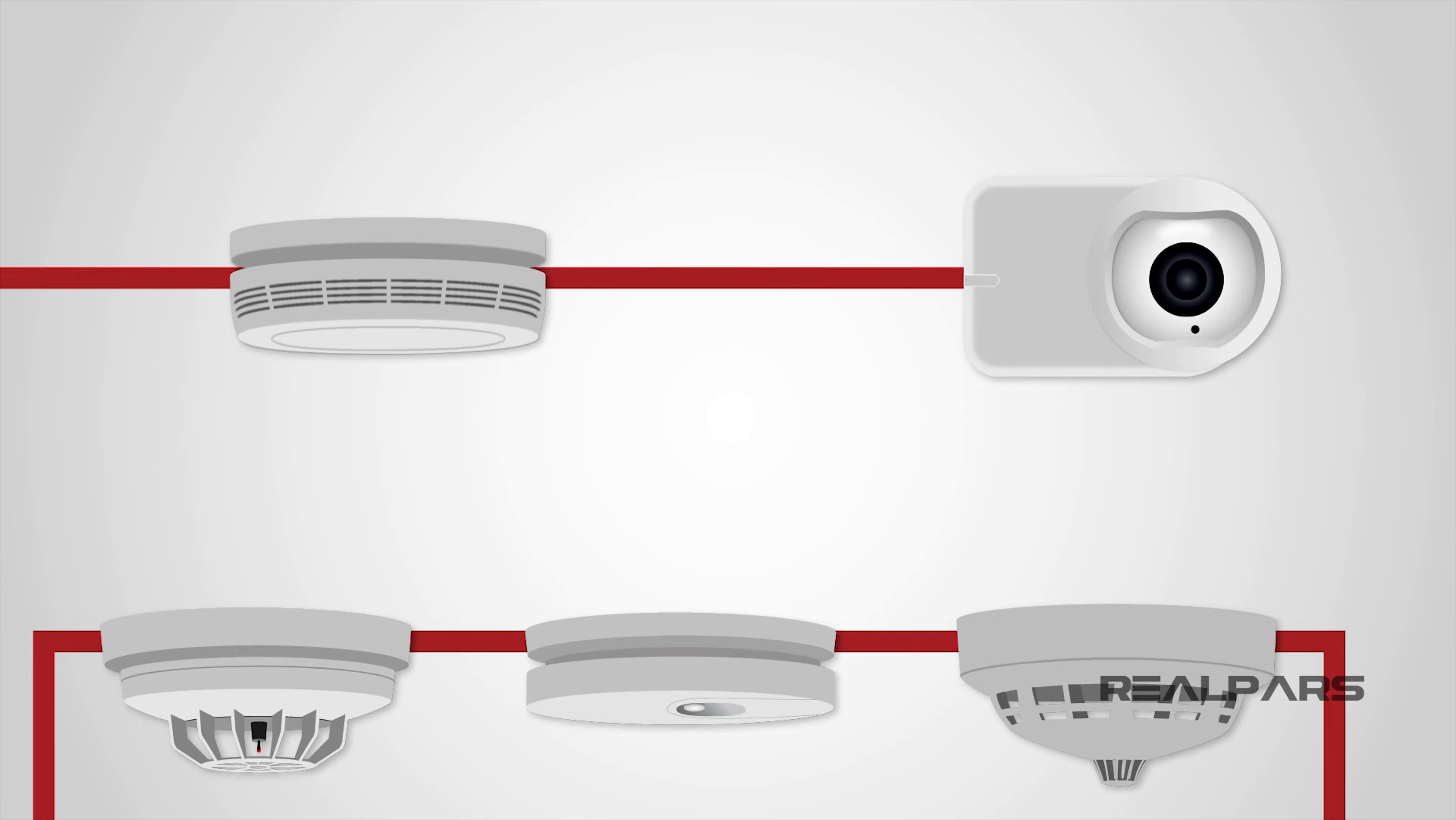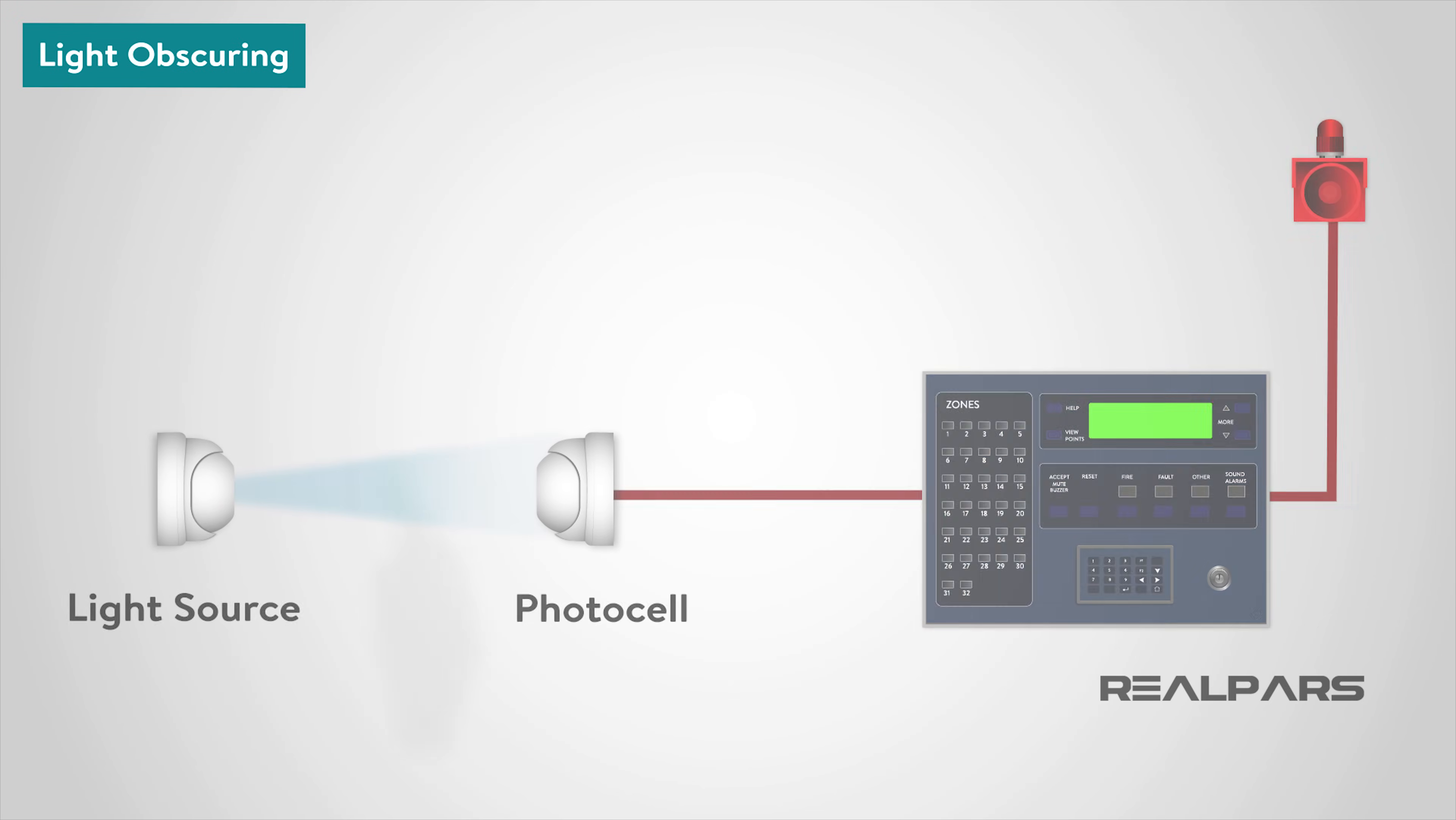In the light obscuring smoke detector, smoke interferes with a light beam between a light source and photocell. The photocell measures the amount of light it receives. The variation in photocell output is being used to initiate an alarm. This type of detection can be used to protect large areas, with a light source and photocell positioned some distance apart.